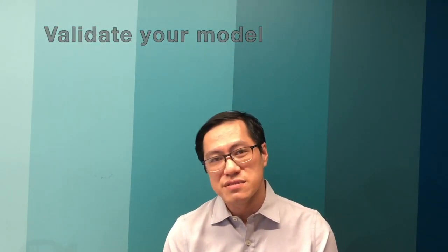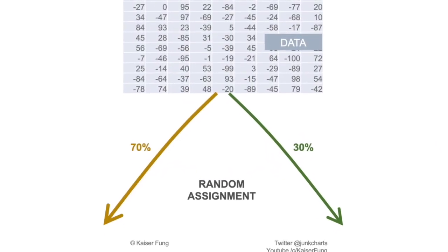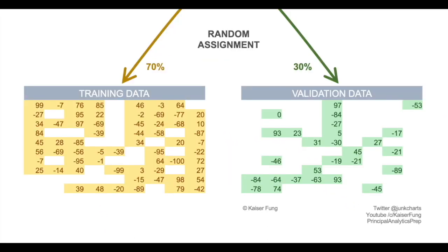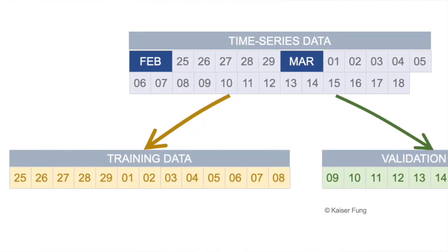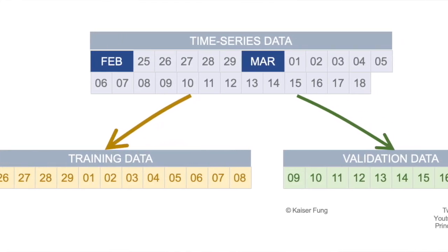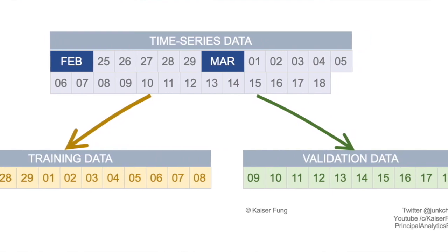In every course you take, you've been told that you need to validate your models. Usually validation data is a random subsample of your historical dataset. If you have a time series, in order to preserve the sequencing of the data, you split the timeline into two parts — the first for training and the second for validation. In finance, this procedure is known as backtesting.